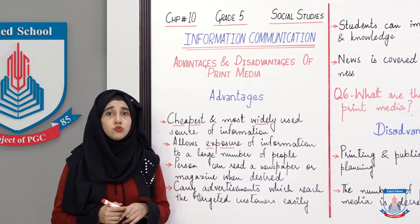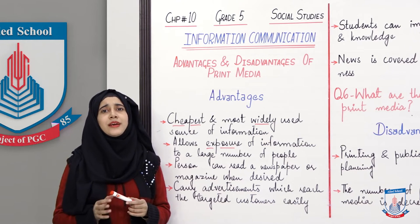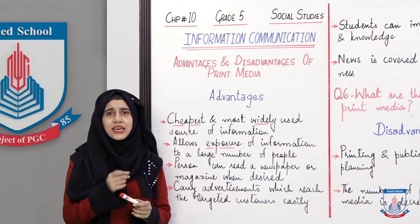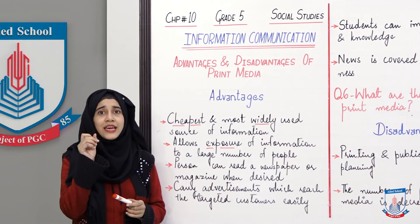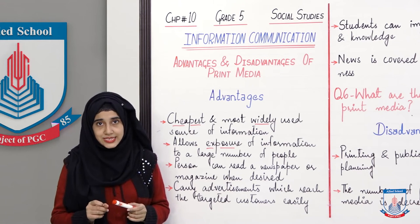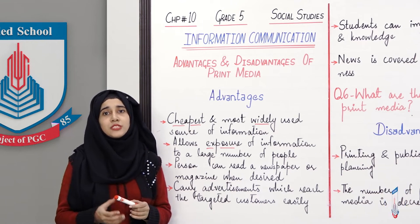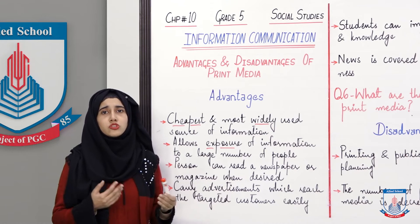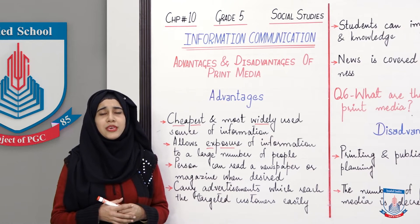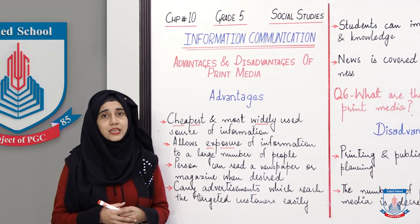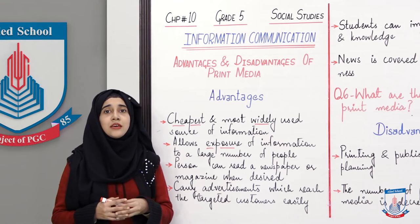You can sit and read a newspaper at your own pace. If you want to see your result or a specific number, you can highlight it from among all the numbers — which you cannot do on TV or radio. For specific information, you may have to watch an entire TV program, whereas in newspapers or magazines, targeted information is much more easily found.